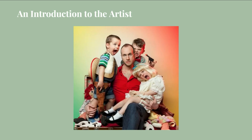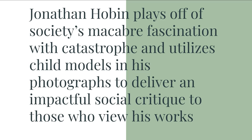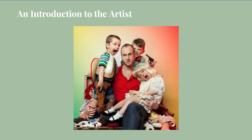This is a photo of Jonathan Hobbin surrounded by child models used in his photographs. Some of the children he uses are paid child models who work professionally, while others are the children of his friends. Born in 1979 in Ottawa, Ontario, Canada, Hobbin has grown up to become a controversial figure in Canada and abroad due to the nature of his work.